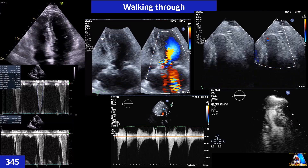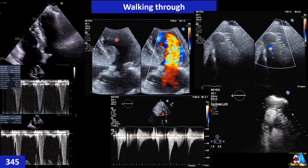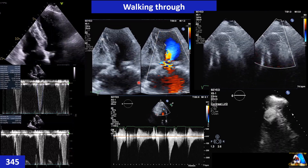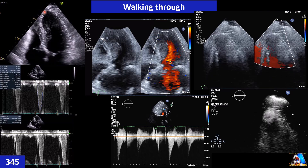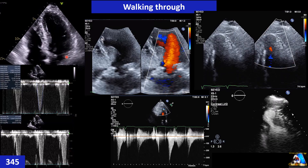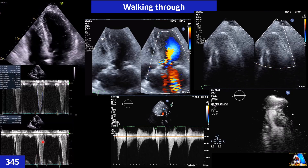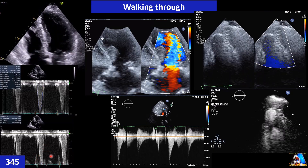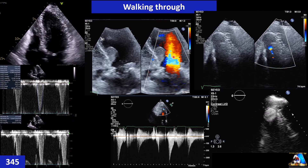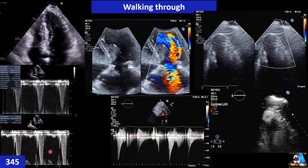So the first step is walking through the LV at different levels and finding the highest velocity, because we will then perform Valsalva at that exact spot where we recorded the highest velocity without Valsalva. Almost always, the highest velocity with Valsalva is obtained at that same specific spot identified during the PW walk-through.